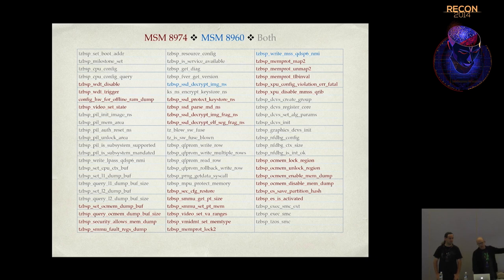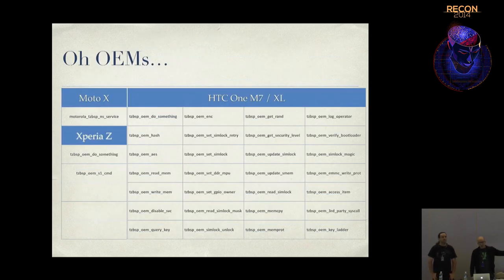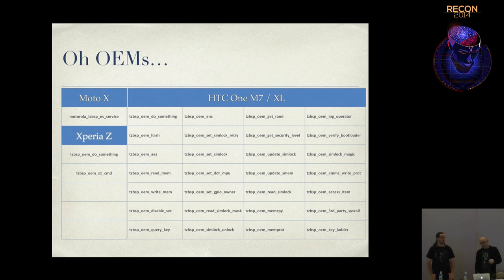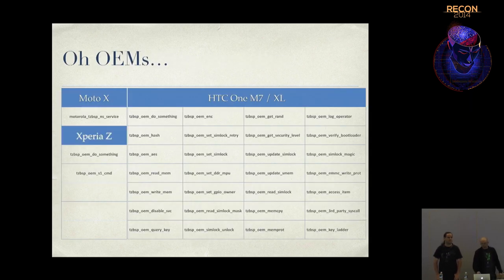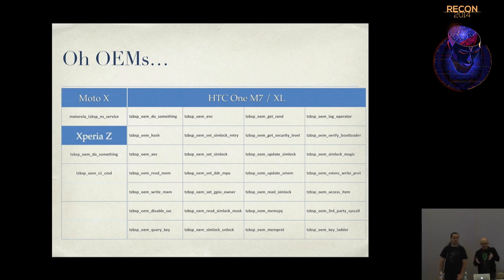This is the base service list that Qualcomm provides, and OEMs can extend it further. The Moto X has one service with about 12 subcommands. The Xperia Z has the S1 command with a number underneath it. The HTC One has large, crazy ones - including OEM read memory, write memory, mem copy - stuff that makes you go, 'Really? Let's find out how that works.'